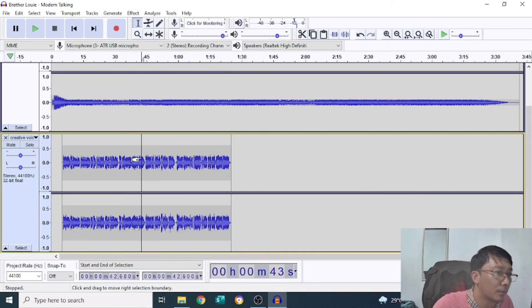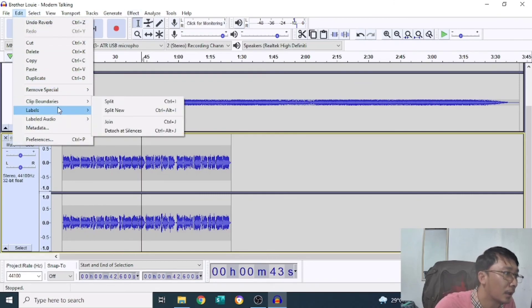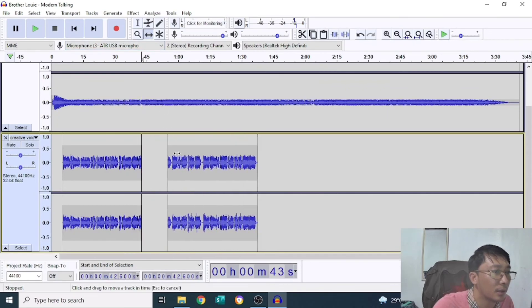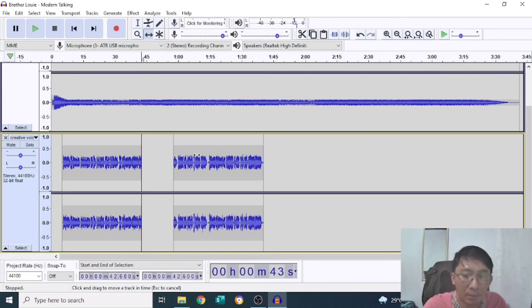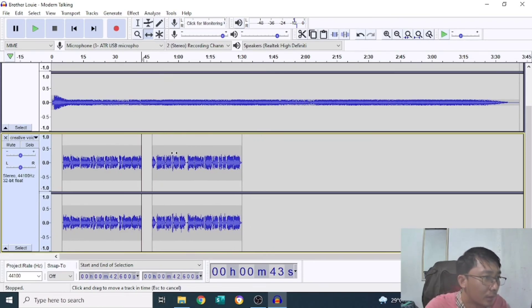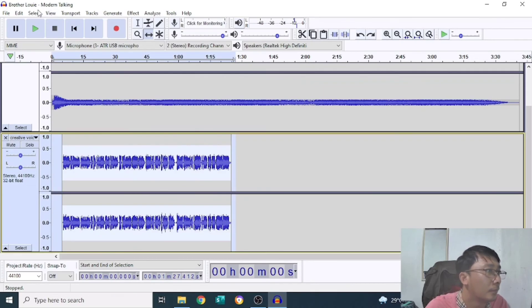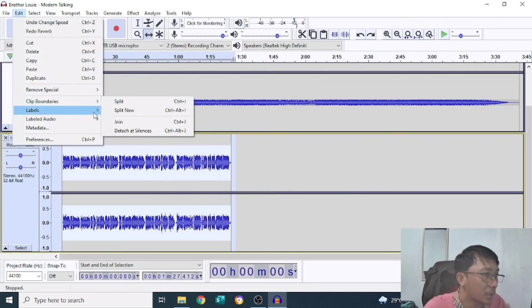Kung gusto naman natin may isingit, for example, dito sa part na ito, is just click using selection tool, then edit, para mag-clip boundaries, then split. So, using time shift tool, mag-iwalay na po sila. Pwede na po mag-singit, kundyari rin ng canned material or another audio dito. Yun po yun. Ang gamit ng clip boundaries. May join din pag pagsasamahin.